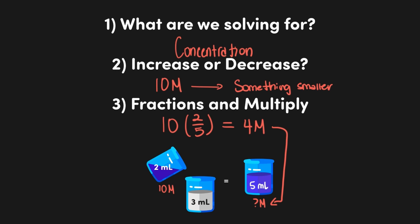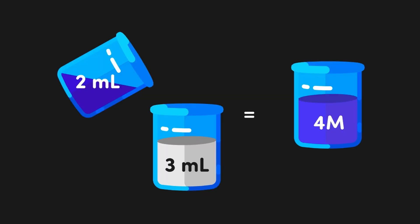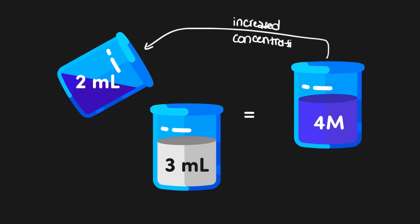What if we were working this question in reverse, and asked to determine the initial concentration given a final 4 molar concentration? We would follow the exact same steps as before, except this time our concentration would be increasing, so we would need to flip our fraction before multiplying. Therefore, the initial concentration would be calculated by taking 4 molar times five-halves, which equals 10 molar.